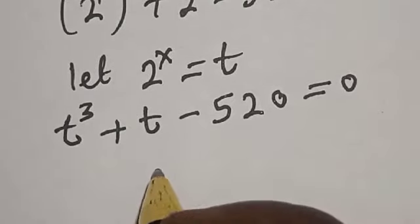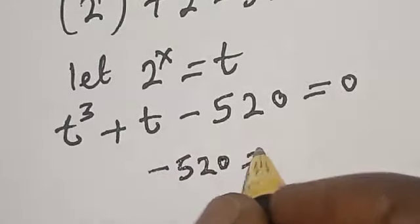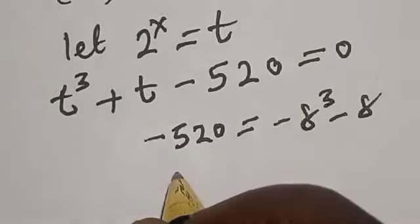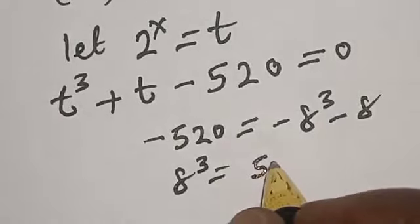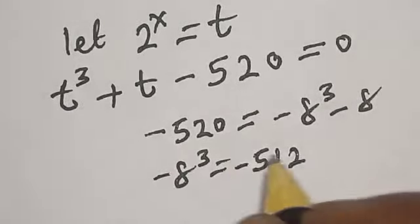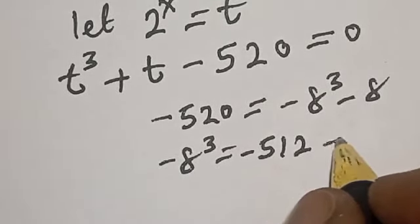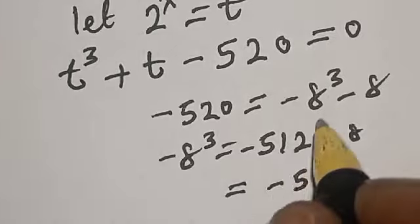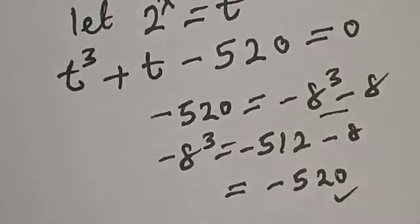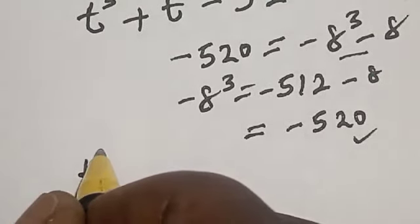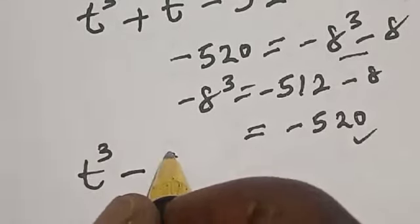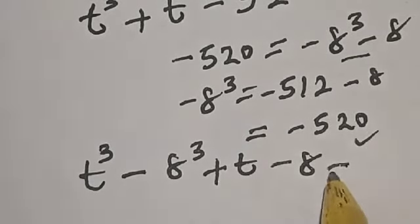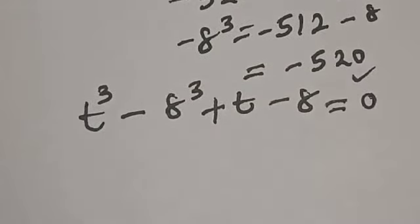Now let's manipulate minus 520. We note that minus 520 equals minus 8 raised to power 3 minus 8, because 8 raised to power 3 is 512, so minus 512 minus 8 equals minus 520. Substituting this, we have t raised to power 3 minus 8 raised to power 3, plus t minus 8, is equal to 0.